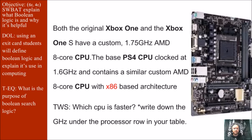Now to the processor. Both the original Xbox One and the Xbox One S have a custom 1.75 GHz AMD 8-core CPU, so the number you're writing down is 1.75 GHz under the processor row. The PS4 clocked at 1.6 GHz and contains a similar custom AMD CPU with x86-based architecture — a very common architecture. Everything from Android phones to the computer you're watching this on very likely has this x86 architecture. Think-Write-Share: which CPU is faster? Then write down the GHz under the processor row.